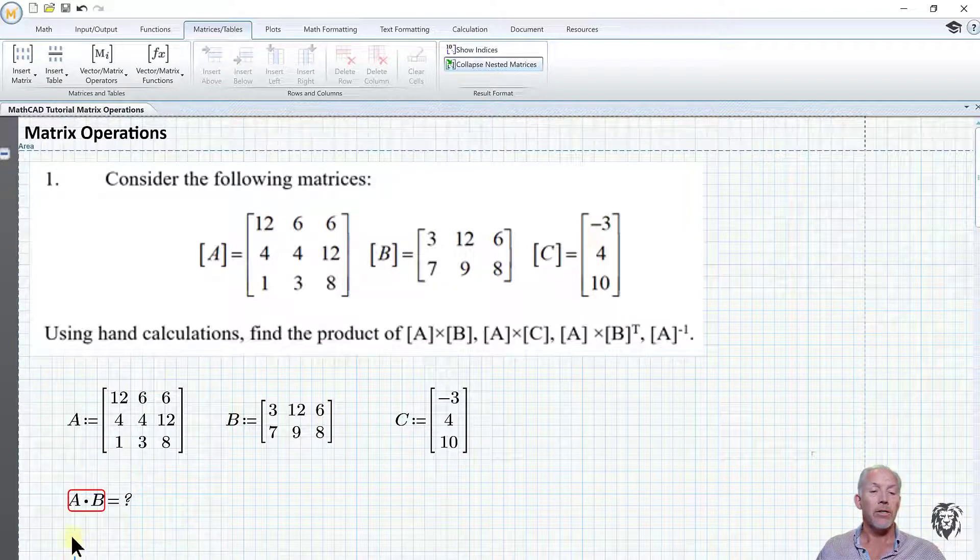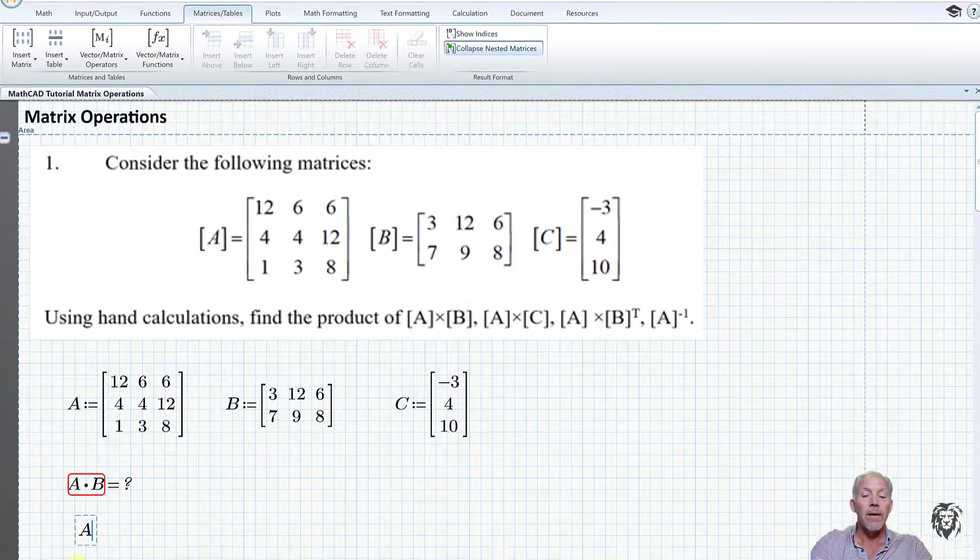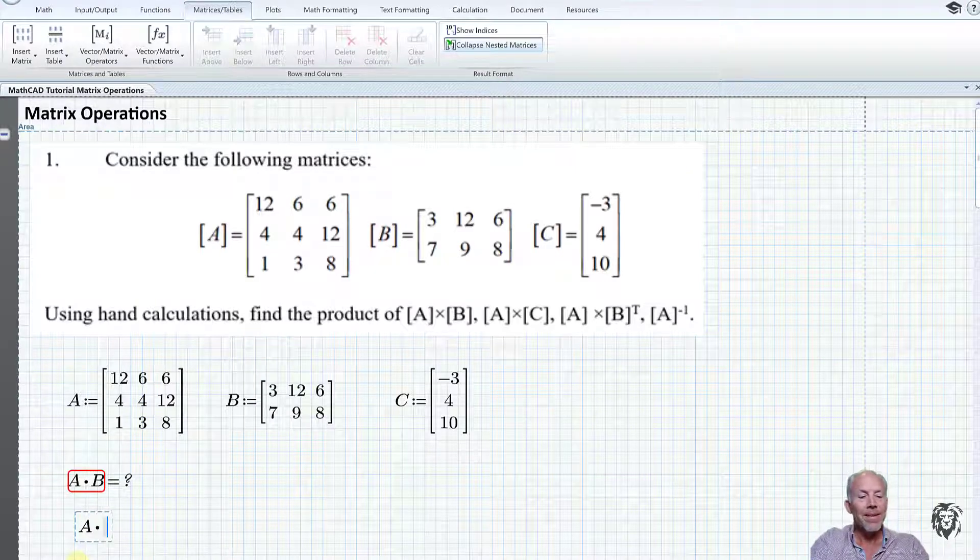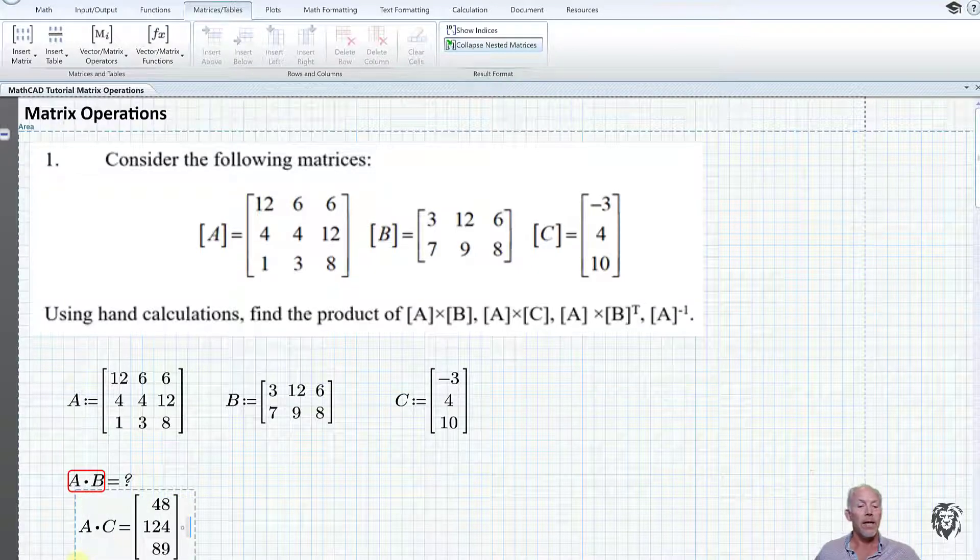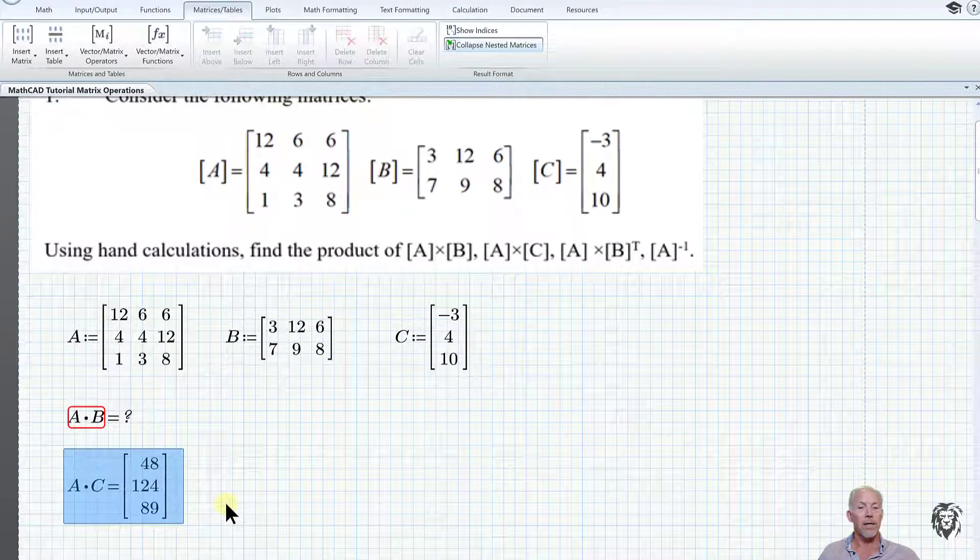Let's move on to the next one. Matrix A multiplied by C. I hit my equal sign and we get an answer. I'm just going to tidy that up, move it down a little bit, put it in a better spot.